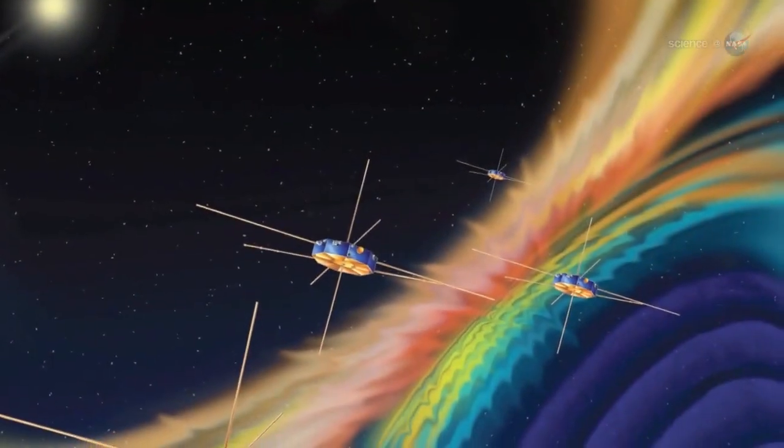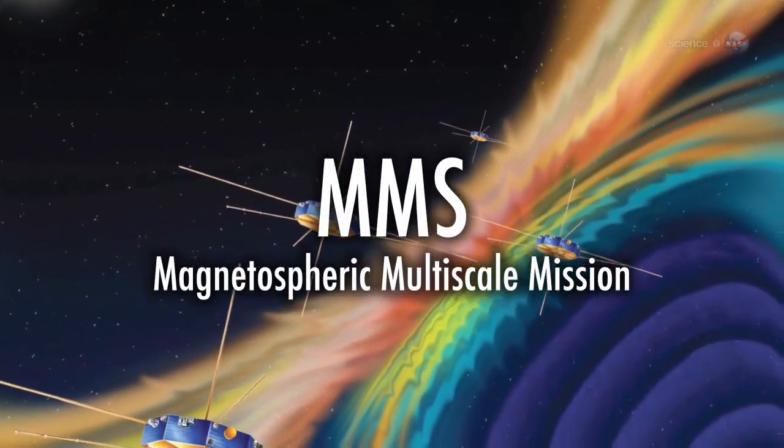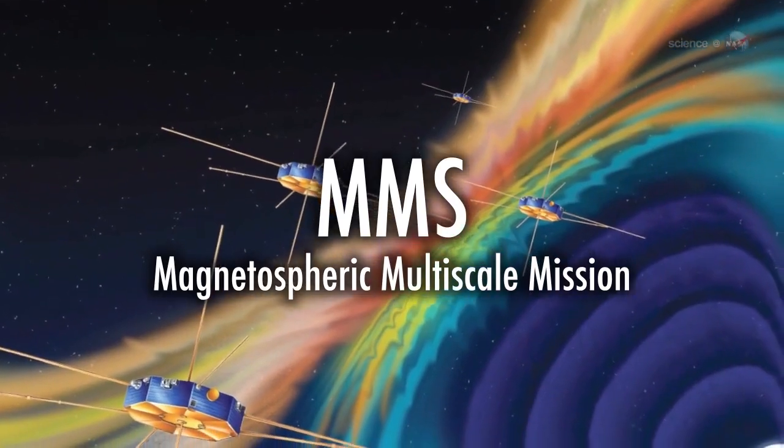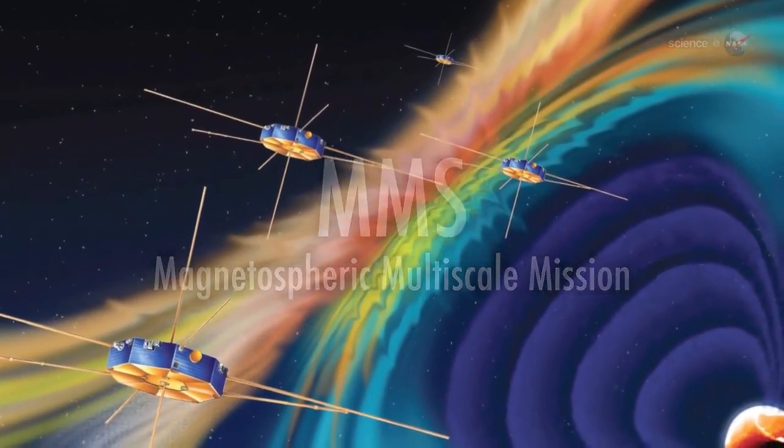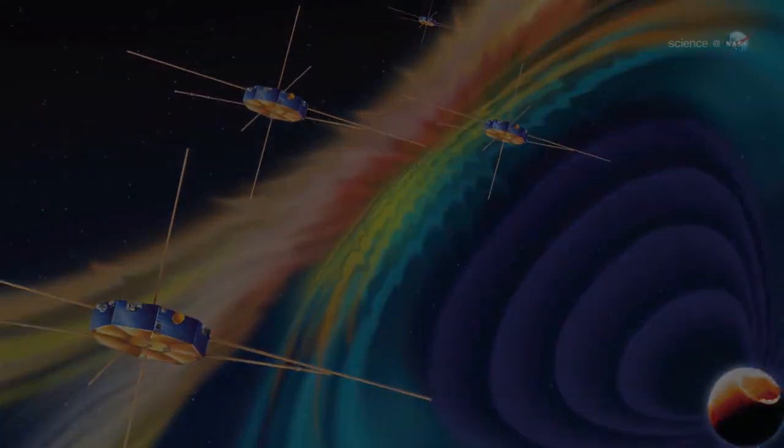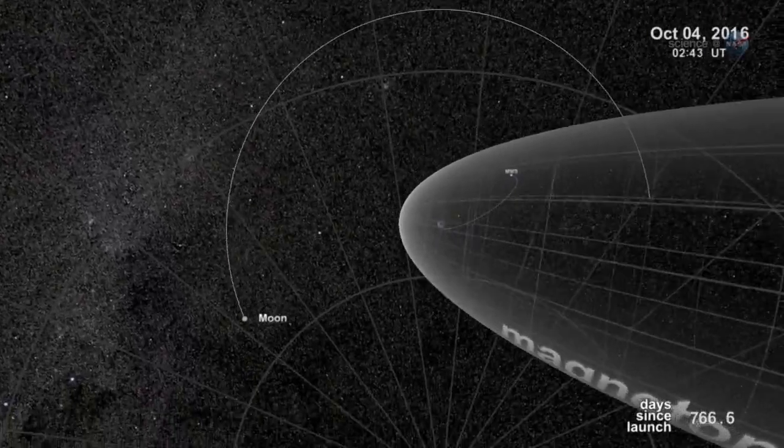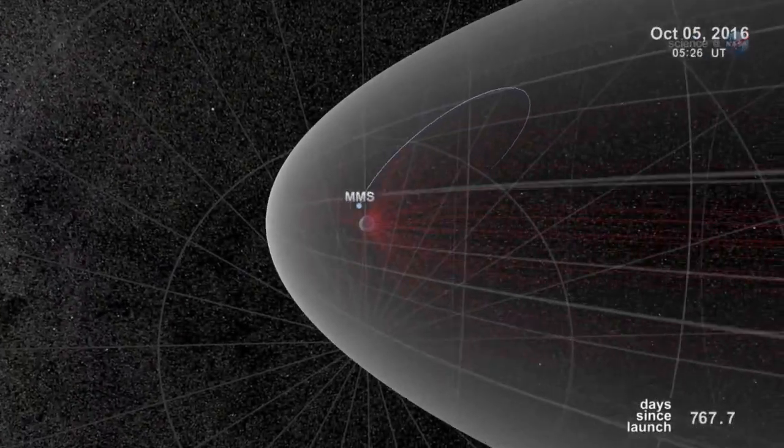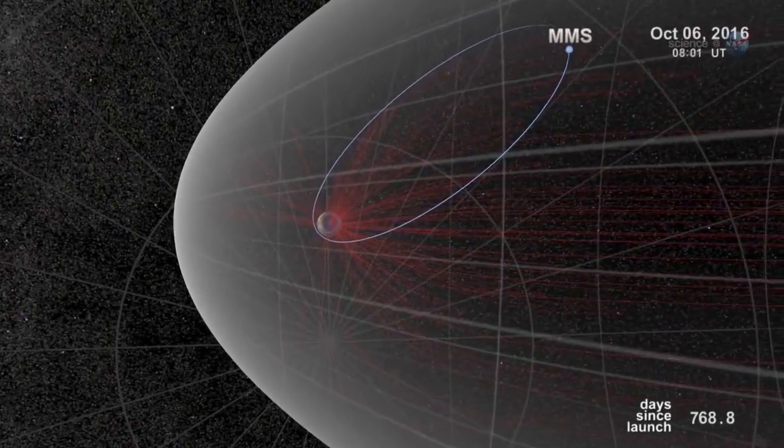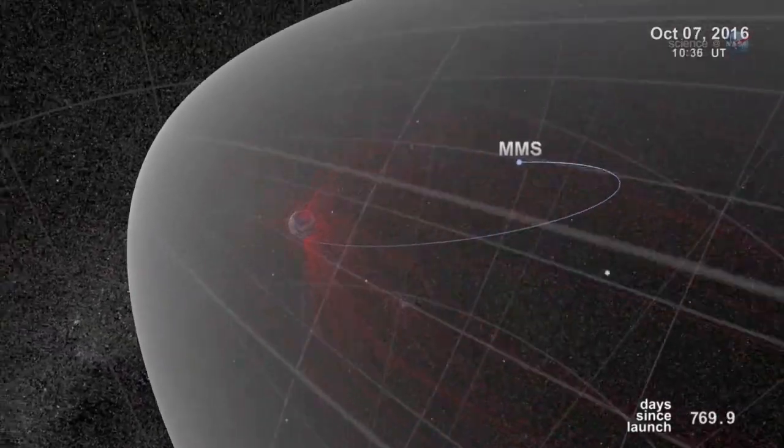NASA is planning a mission called MMS, short for Magnetospheric Multiscale Mission, due to launch in 2014 to study the phenomenon. Bristling with energetic particle detectors and magnetic sensors, the four spacecraft of MMS will spread out in Earth's magnetosphere and surround the portals to observe how they work.